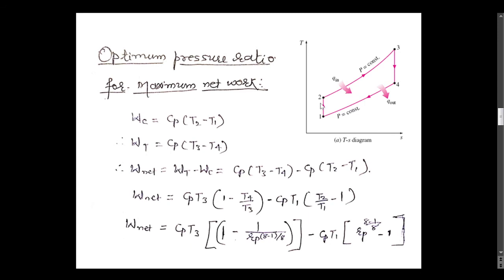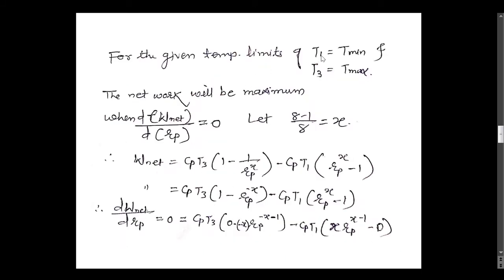Here, WC, the work required for the compressor, is written in terms of specific heat and temperatures T1 and T2, that is Cp(T2 minus T1). And WT is written in terms of T3 and T4. As per the definition, W_net is equal to WT minus WC. By substituting WT and WC, T3 is taken common from the turbine term and T1 from the compressor term to get a simplified expression. By replacing the temperature ratios in terms of pressure ratio, we get the net work expression. For given temperature limits T1 = T_min and T3 = T_max, the net work will be maximum when the differentiation of W_net with respect to pressure ratio Rp is equal to zero.